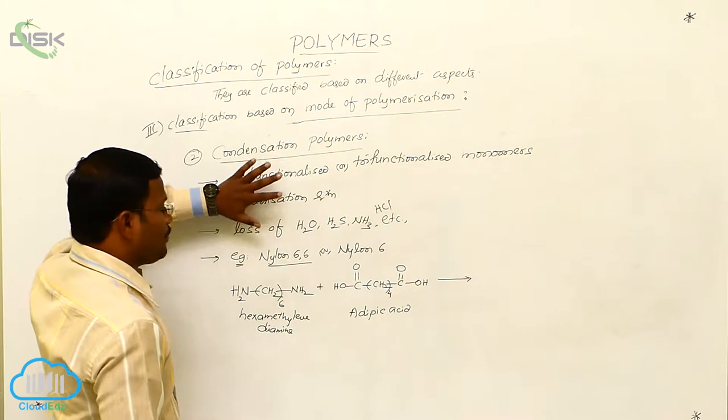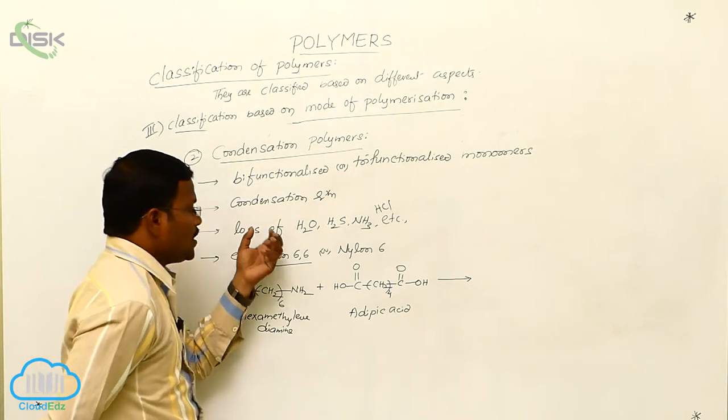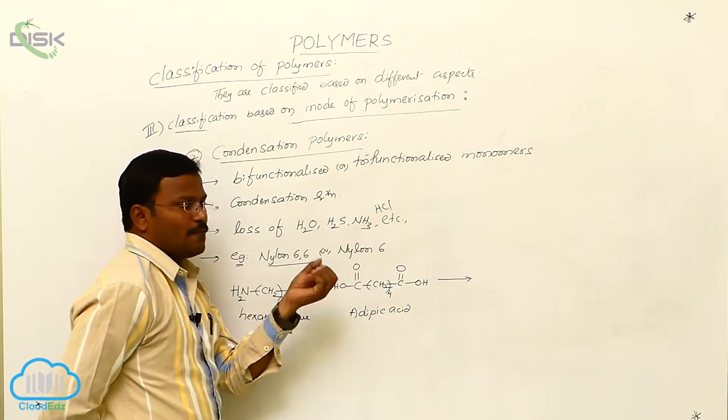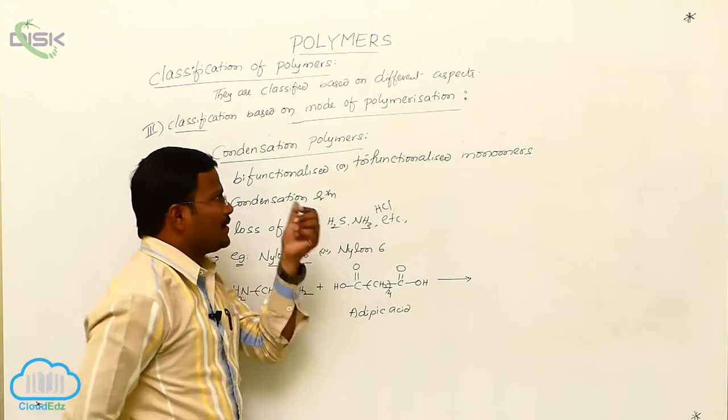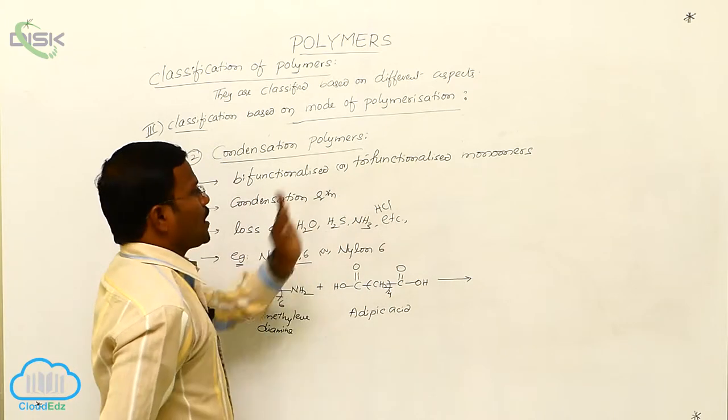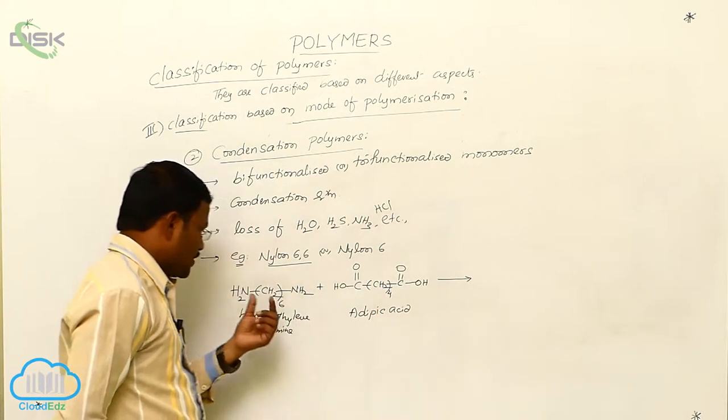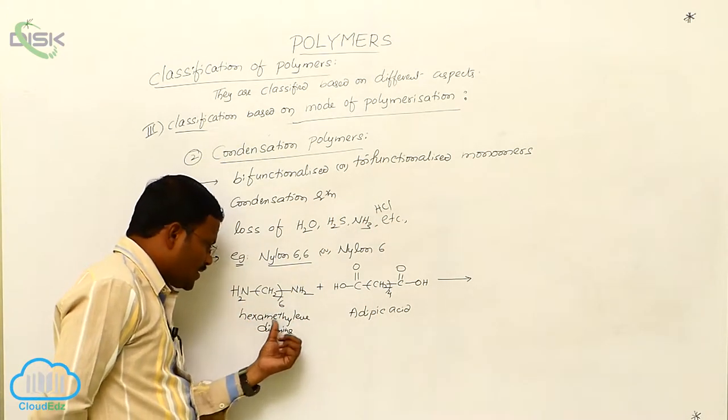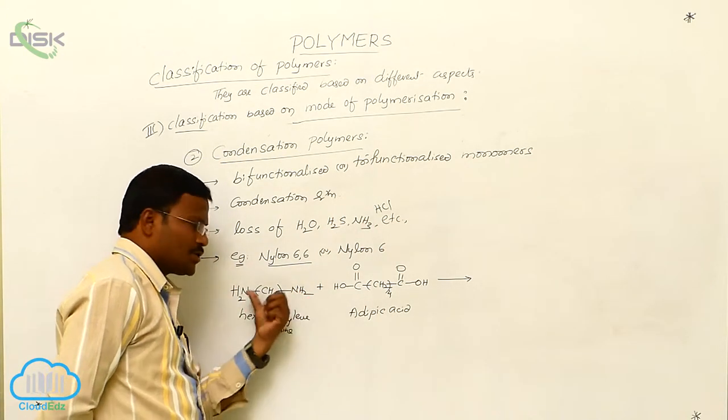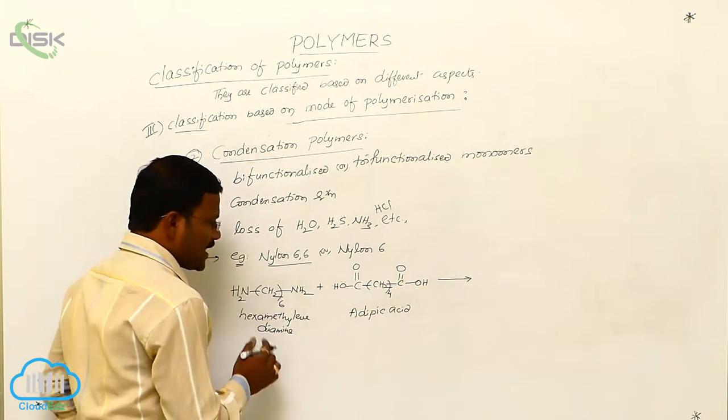Just identify, as per our previous statement under condensation polymers, those monomers which want to produce condensation polymers are bifunctionalized or trifunctionalized chemical species. Here, hexamethylenediamine has 2 amine functional groups, adipic acid has 2 acid functional groups.